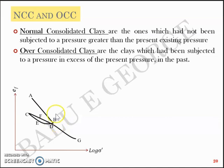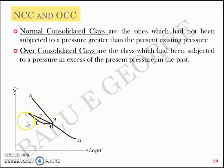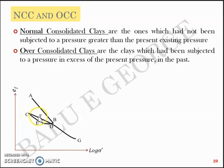Let's assume that at point B you release the load, just like demolishing a six-story building. When you release the load or demolish the structure, the plot goes like B, E, C. And again, if you construct a three-story building, the plot will be C, F, D, G. So A-B is the loading path, then demolishing causes unloading along B-E-C, and increasing load again traces C-F-D-G, moving all the way down to point G.